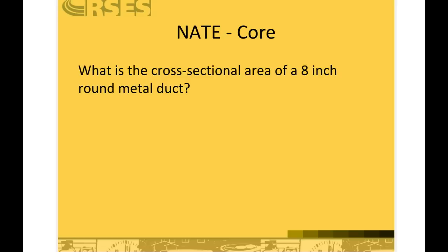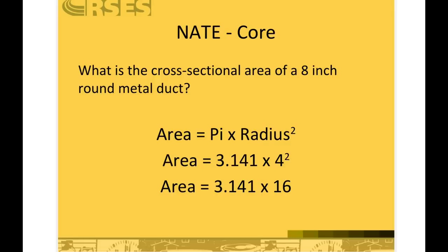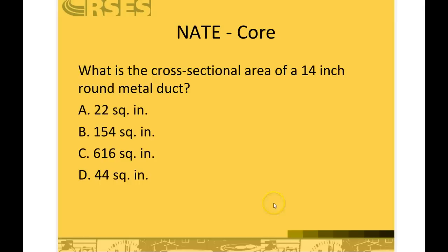What is the cross-sectional area of an 8-inch round metal duct? The first thing you need to remember is 8-inch round metal duct means it's 8 inches in diameter. That gives it a radius of 4 inches. Then you start to plug this into your formula. The area equals pi times the radius squared. So, the area equals pi, which is 3.141, times the area, which is 4 squared. If you remember from math class, when we're talking about squaring a number, it is that number multiplied by itself. So, this would be 4 times 4. The area equals 3.141 times 16. Or, the area equals 50 square inches.